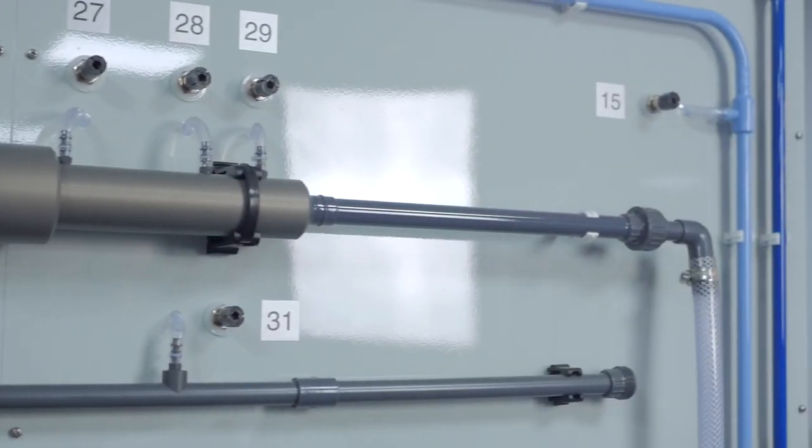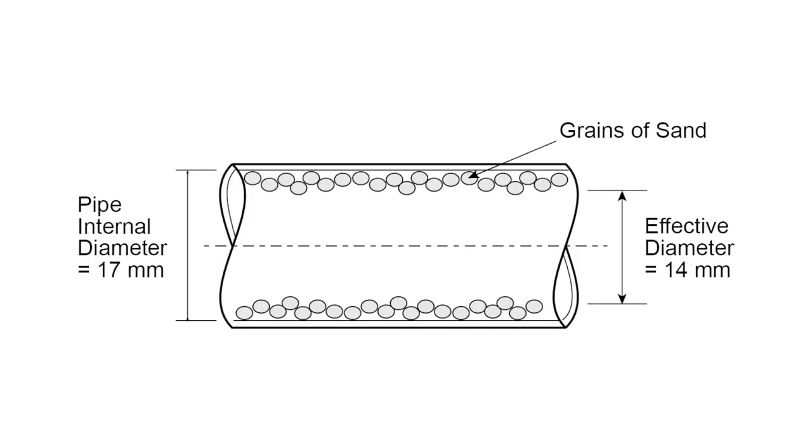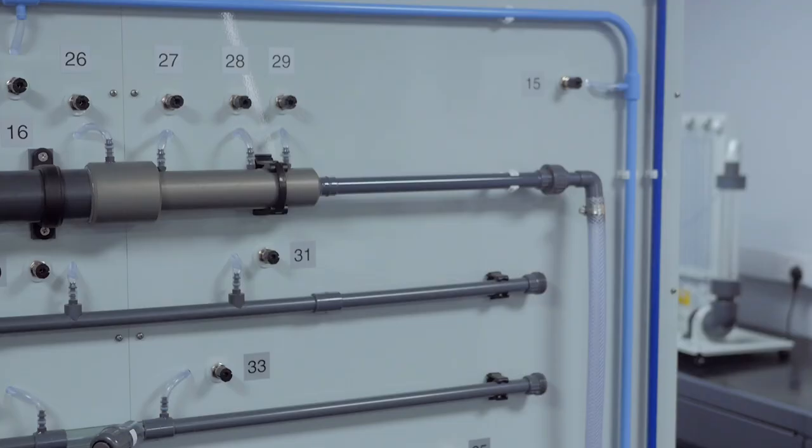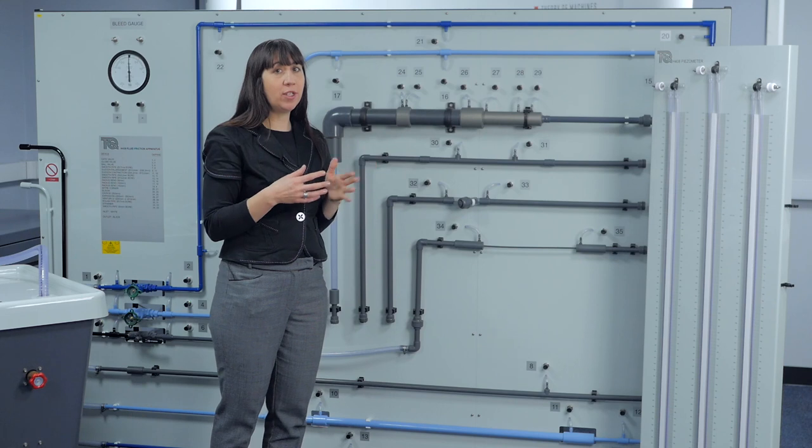Let me tell you about the artificially roughened pipe. This allows you to study the friction factor at different Reynolds numbers.